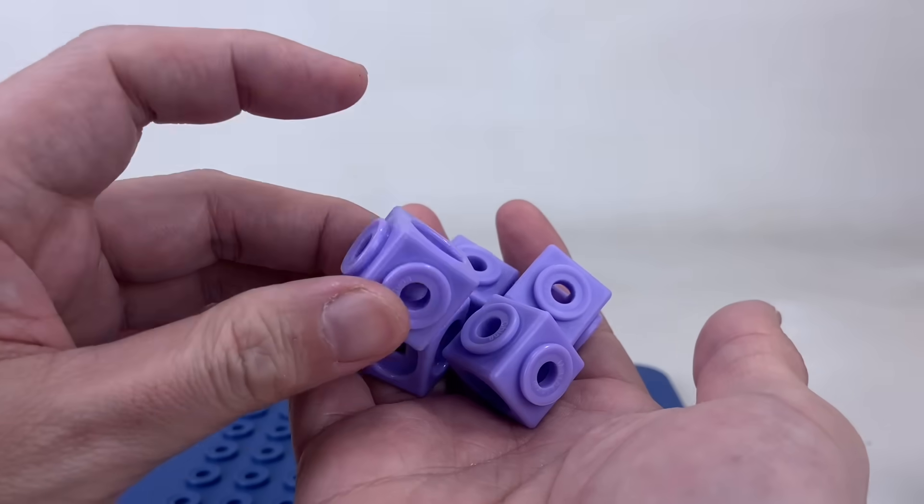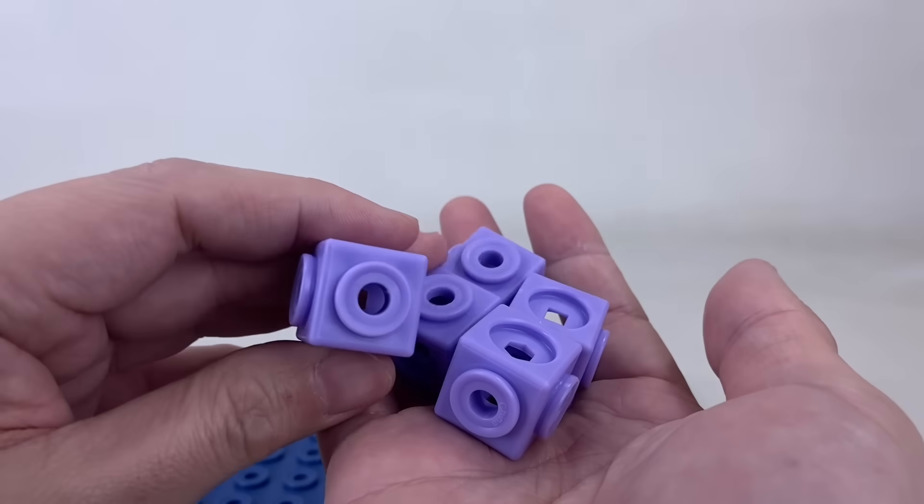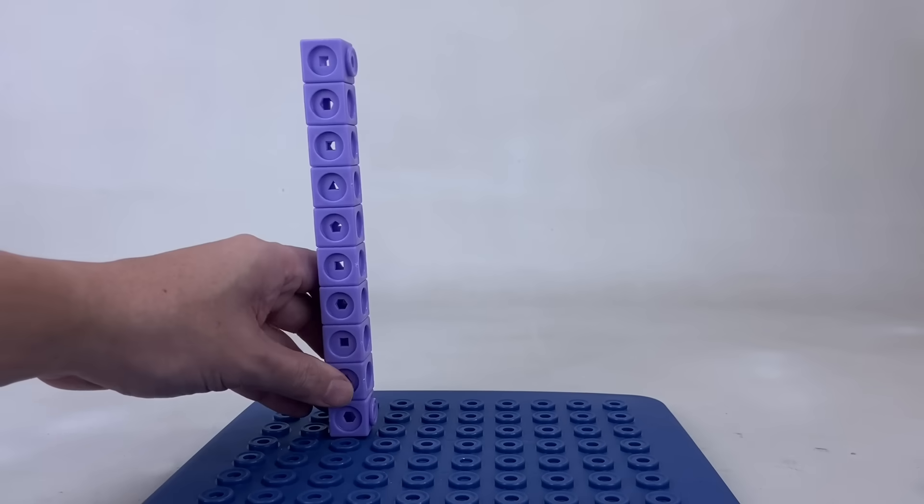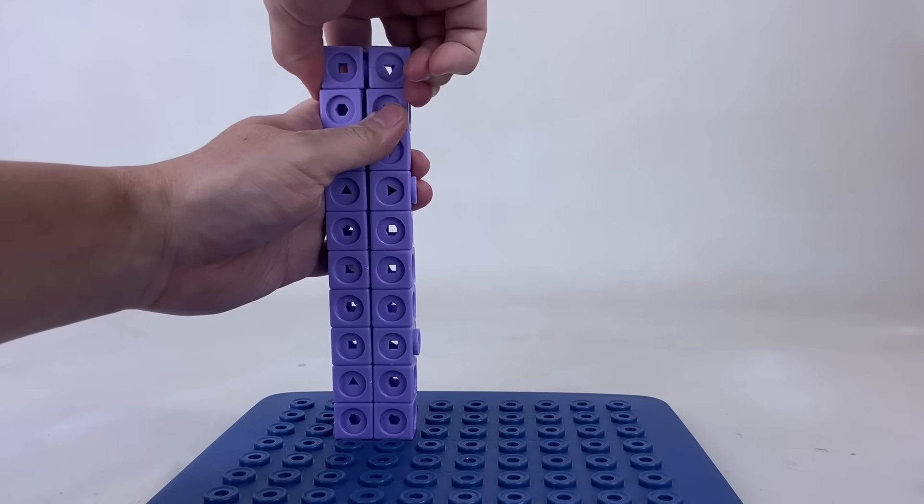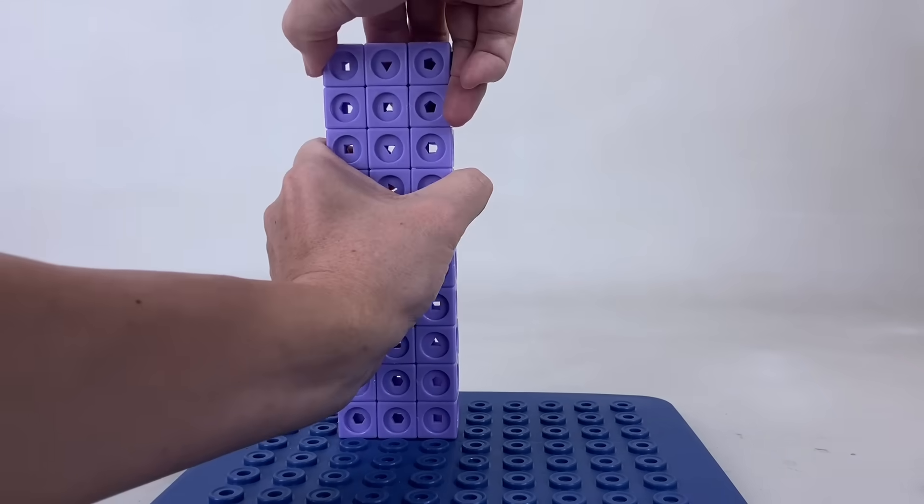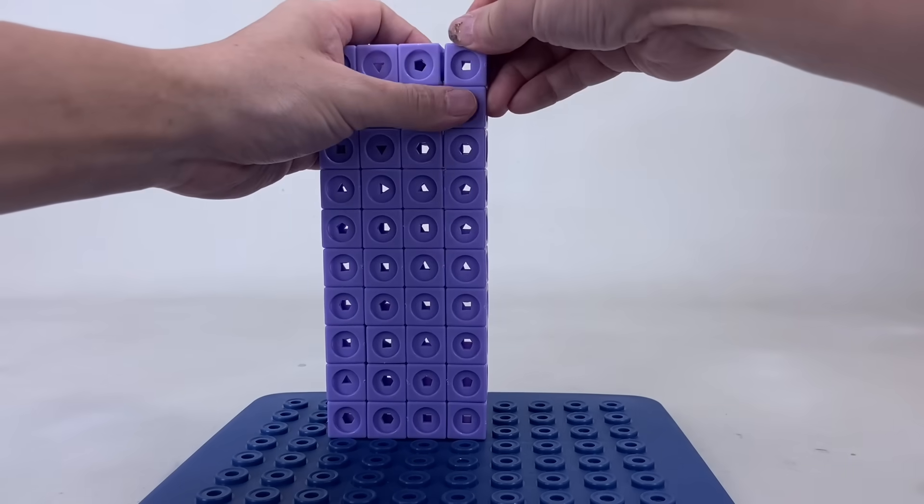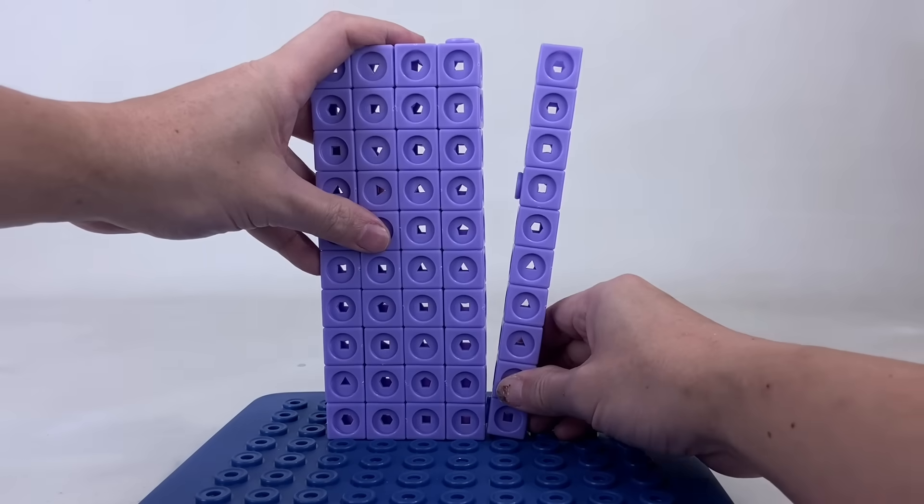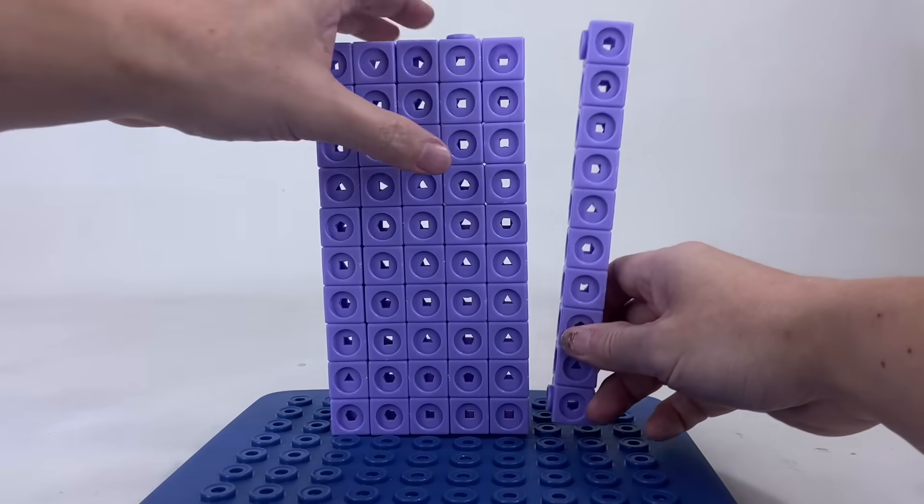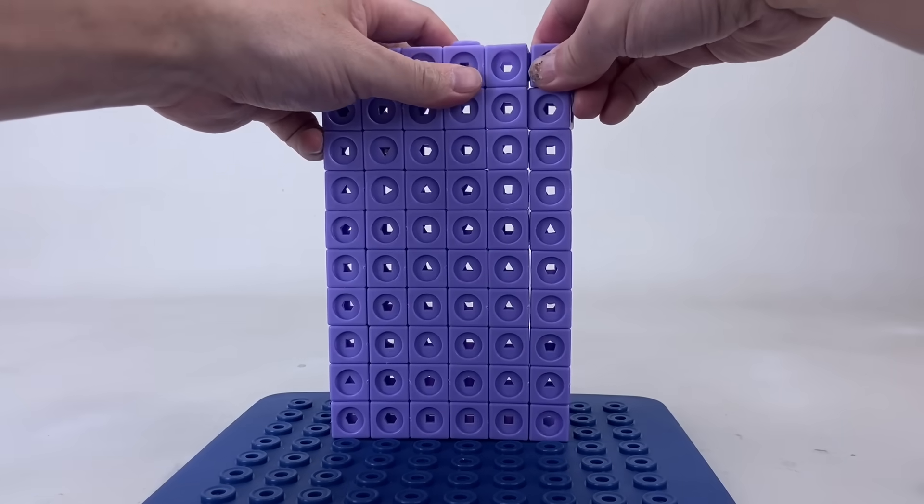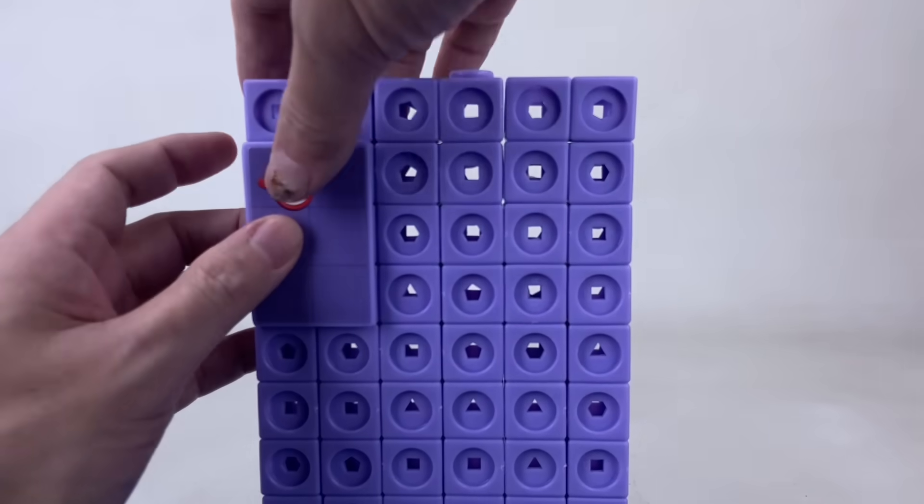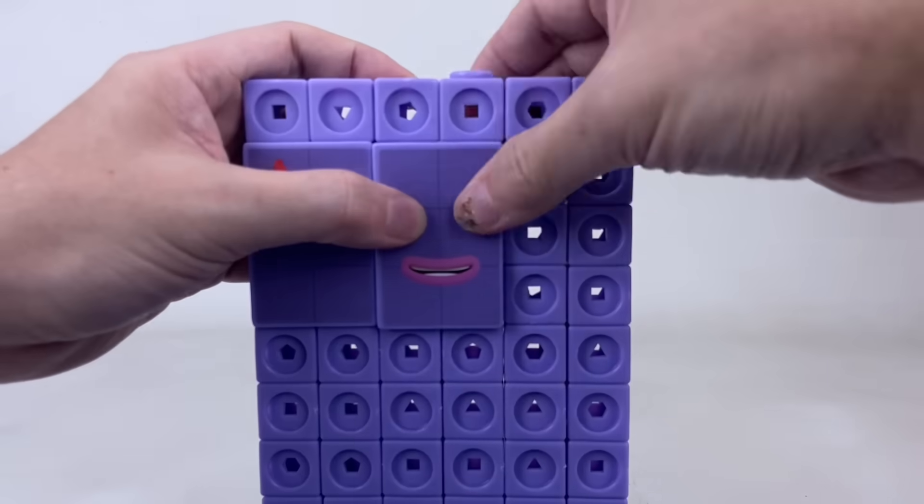Now it's time to play with the next number block. This time we'll need five light purple special connectors and a total of 10, 20, 30, 40, 50, 60 light purple blocks.